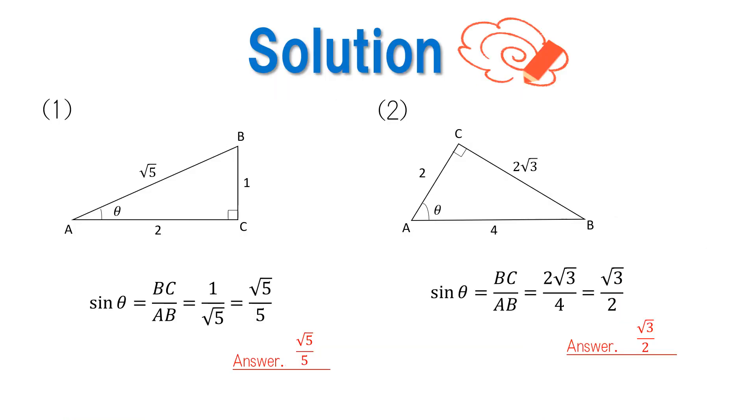Now let's check our answers. For number one, in the right triangle shown in the figure, sine theta equals BC over AB, which equals 1 over square root of 5, which equals square root of 5 over 5. The answer is square root of 5 over 5.